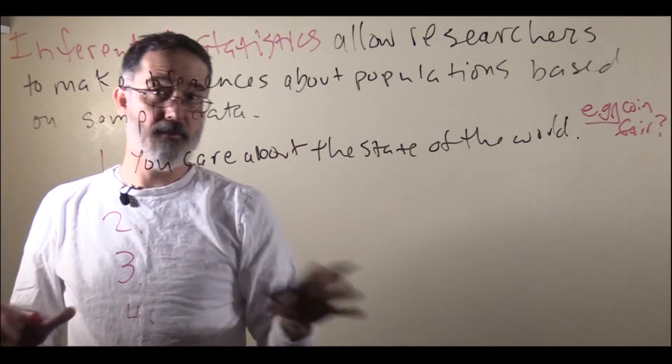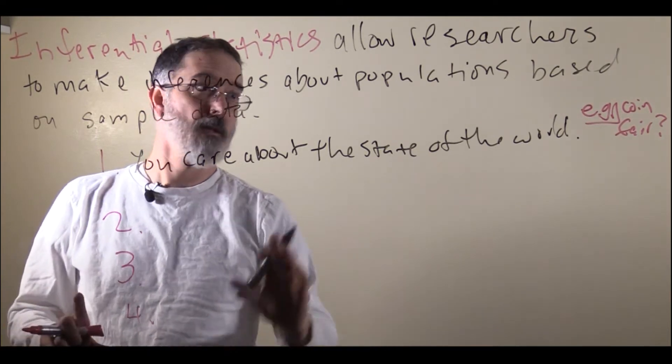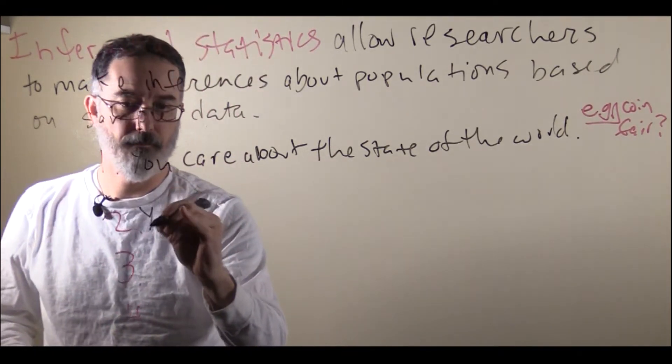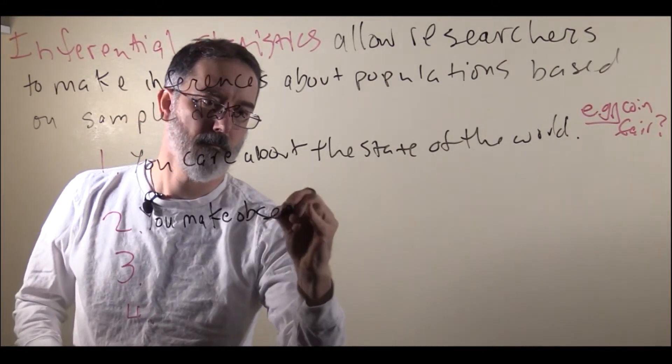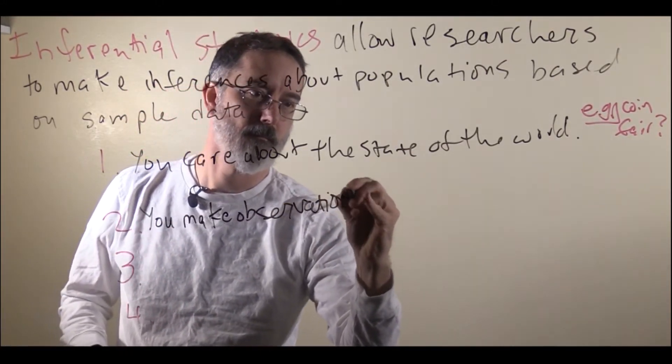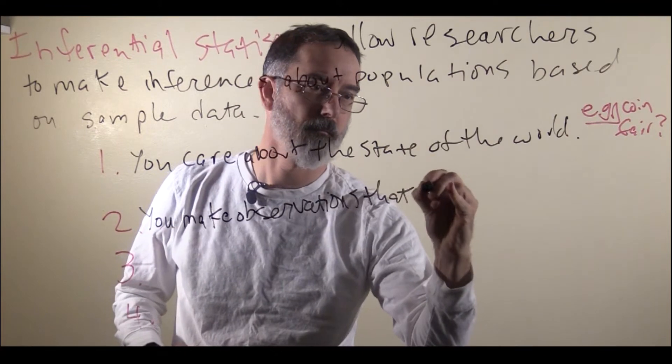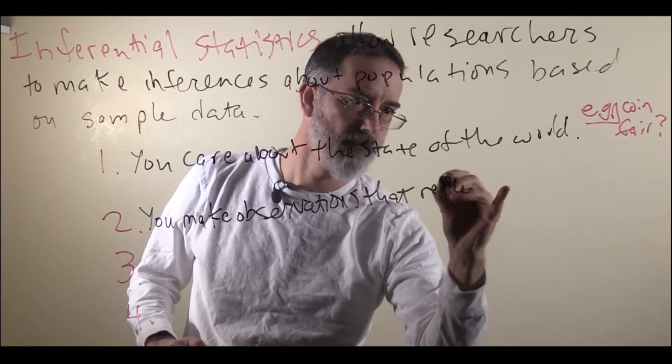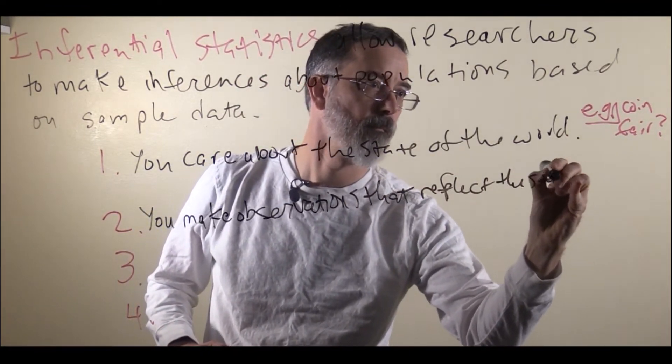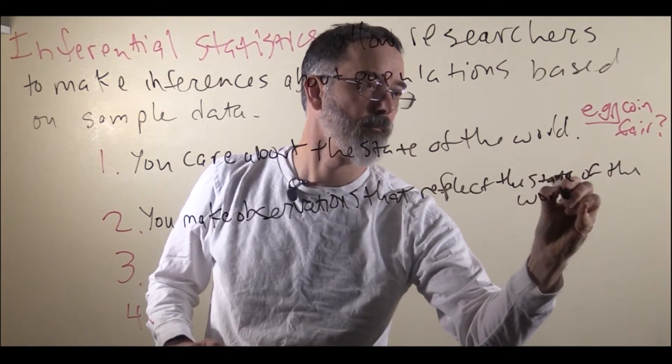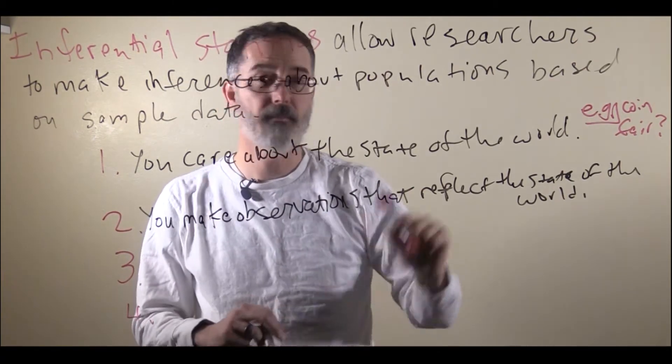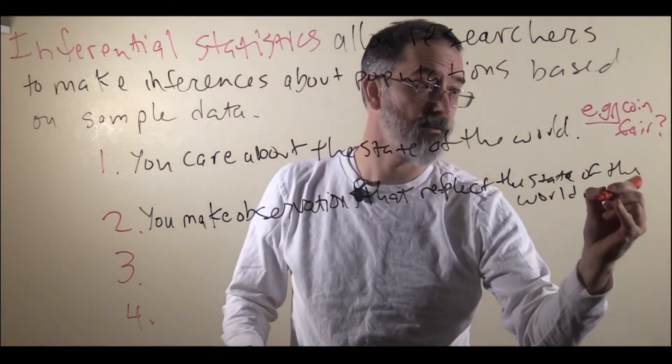So what you do is you make observations that reflect the state of the world. For example, you flip the coin. This will be collecting your sample data.